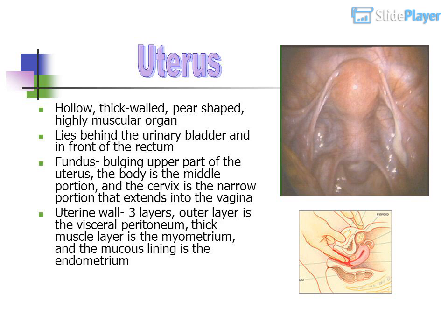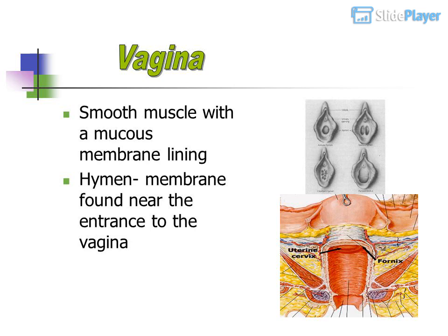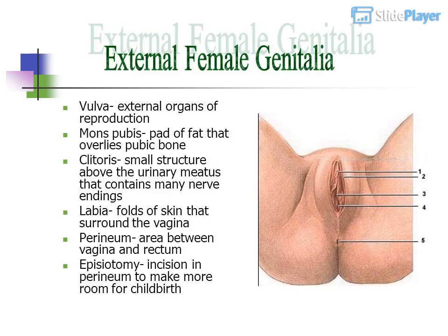The uterine wall has three layers: the outer layer is the visceral peritoneum, the thick muscle layer is the myometrium, and the mucous lining is the endometrium. The vagina is smooth muscle with a mucous membrane lining. The hymen is a membrane found near the entrance to the vagina.